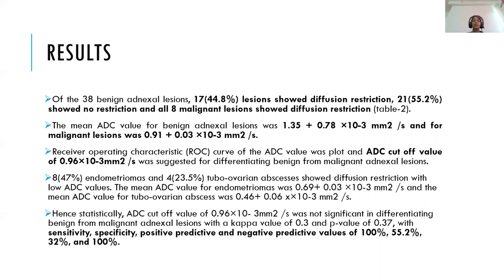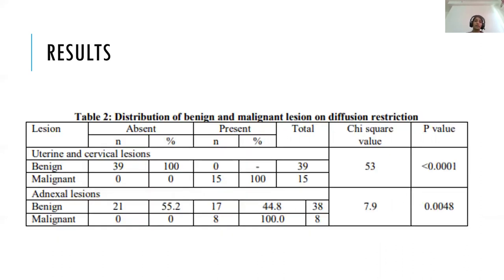47% of endometriomas and 23.5% of tubo-ovarian abscesses showed diffusion restriction with low ADC values. The mean ADC for endometrioma was 0.69 ± 0.03 × 10⁻³ mm²/s and for tubo-ovarian abscess was 0.46 ± 0.06 × 10⁻³ mm²/s. Statistically, the ADC cutoff value of 0.96 × 10⁻³ mm²/s was not significant in differentiating benign from malignant adnexal lesions, with a kappa value of 0.3 and p-value of 0.37, with sensitivity, specificity, positive predictive value, and negative predictive value of 100%, 55.2%, 32%, and 100% respectively.